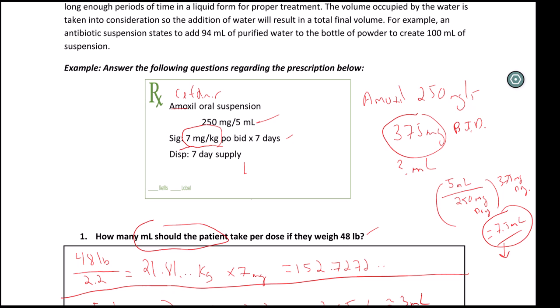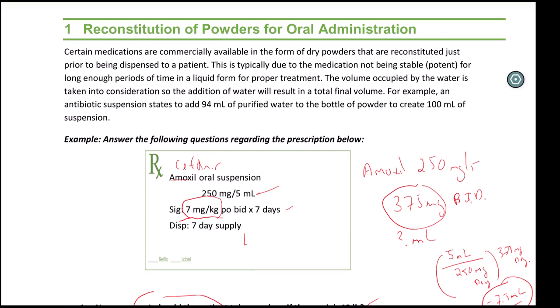So then you take 7.5 mLs and you would say, well, five mLs is one teaspoon. And 7.5 mLs would be one and a half teaspoons. So the directions would be take one and a half teaspoons by mouth twice a day for seven days.